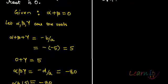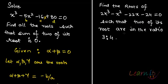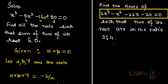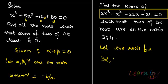That's how you can find your roots with a given condition. Now a different kind of question: we are given the equation 2x³ - x² - 22x - 24 = 0, and we know that two of the roots are in the ratio 3:4. So we let the roots be 3α, 4α, and β.